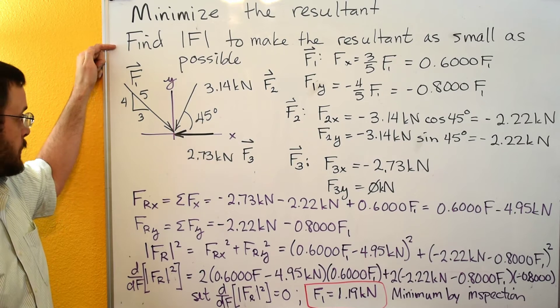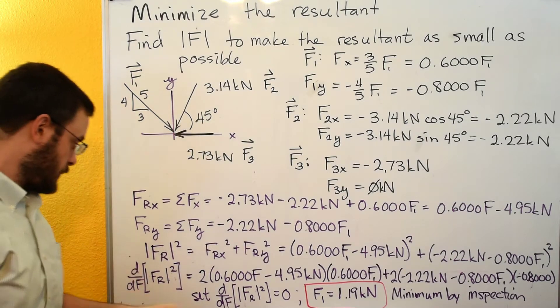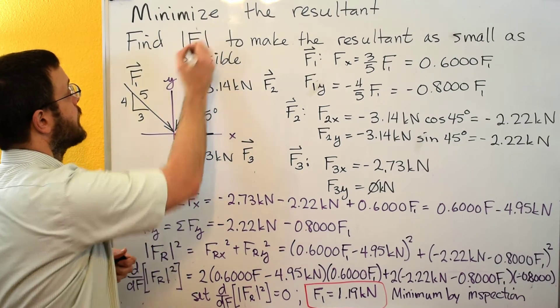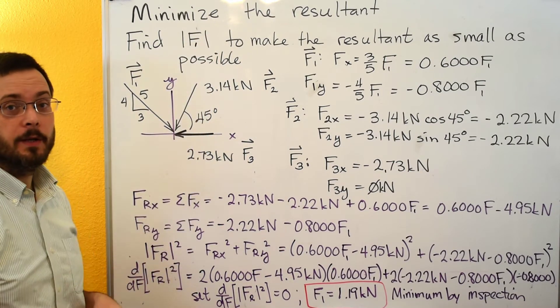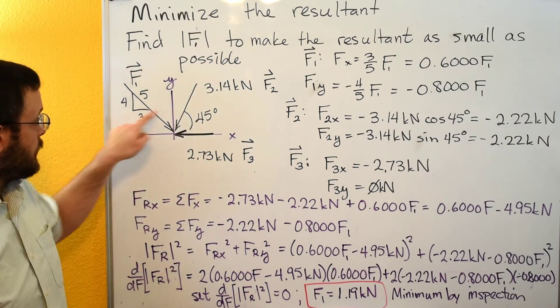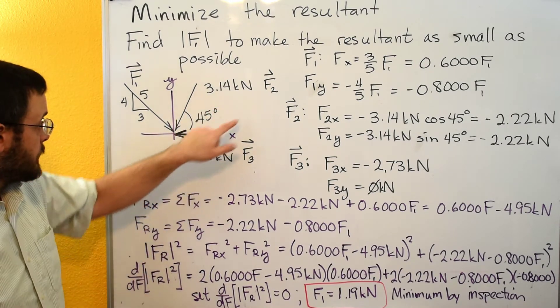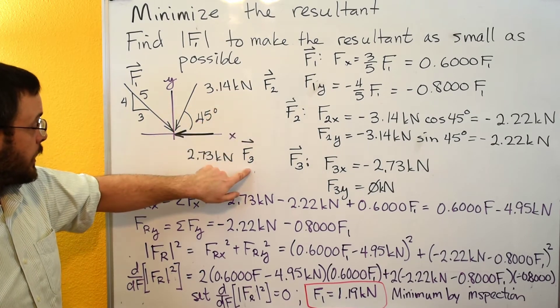So we're going to find the magnitude of this unknown force vector F1 to make the resultant of F1, this vector, and this vector be as small as possible. So I've labeled this vector F2 and this vector F3.